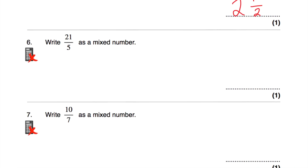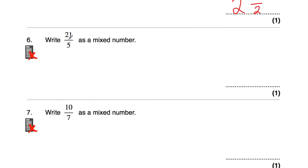Question number 6: write 21 fifths as a mixed number. How many 5s go into 21? That's going to be 4, and then the remainder is 1, so it's going to be 1 fifth. The answer is 4 and 1 fifth.